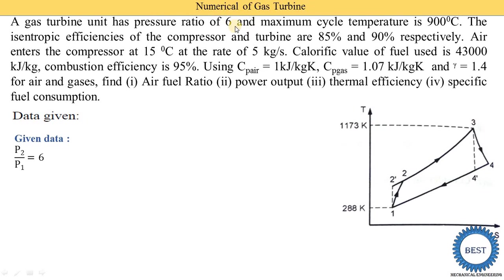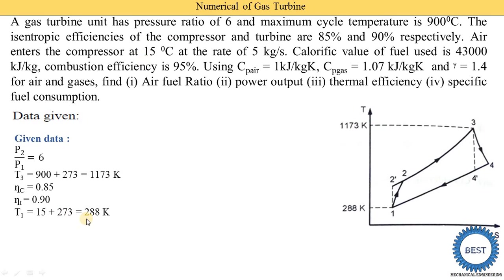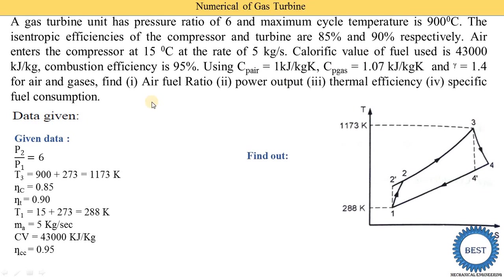Writing the given data: P2/P1 = 6; T3 = 900 + 273 = 1173 K; isentropic efficiency of compressor = 0.85; turbine efficiency = 0.90; T1 = 15 + 273 = 288 K; mass of air MA = 5 kg/s; CV = 43,000 kJ/kg; combustion chamber efficiency = 0.95. We need to find: air-fuel ratio (MA/MF), power output (net work), thermal efficiency, and SFC.